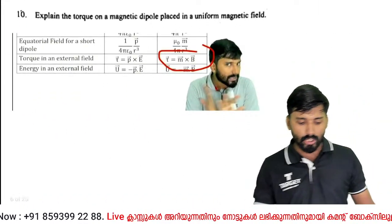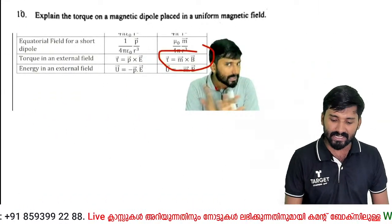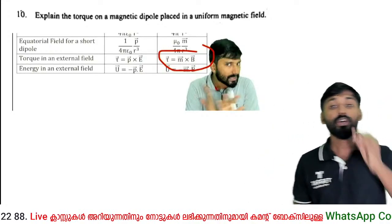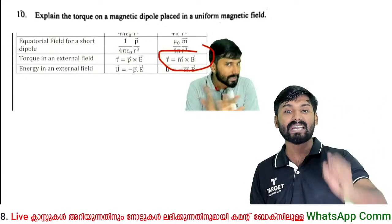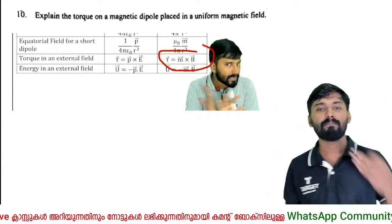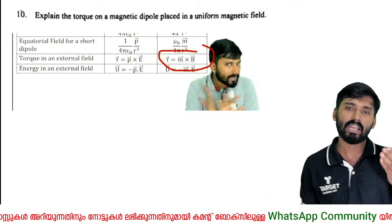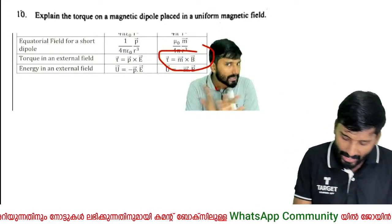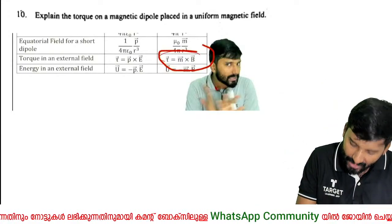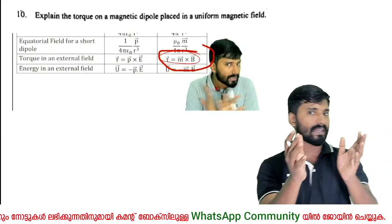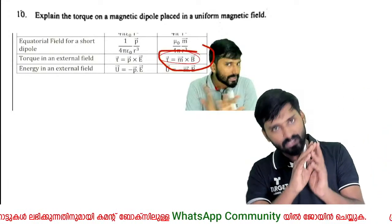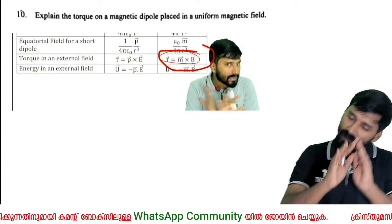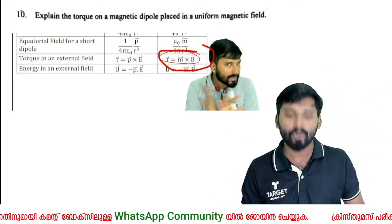Explain the torque on a magnetic dipole placed in a uniform magnetic field. The torque is given by M cross B. The expression is tau = M × B.